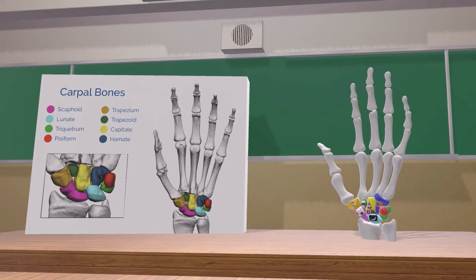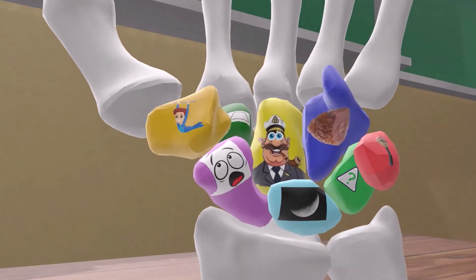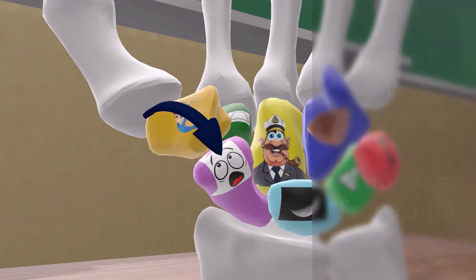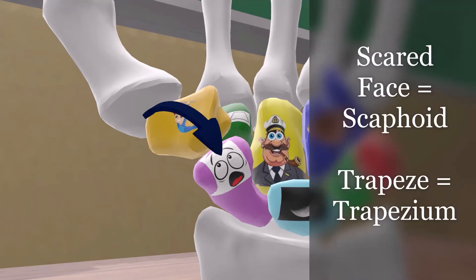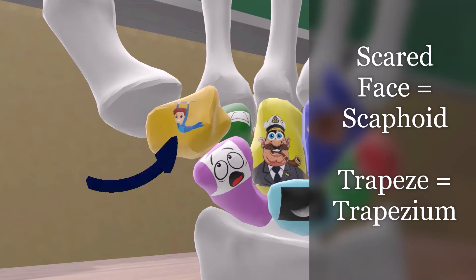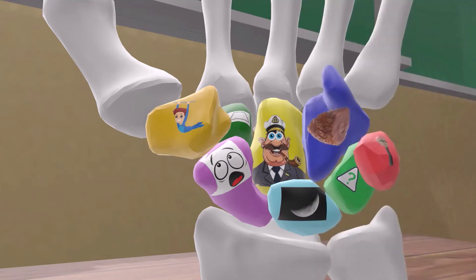Let's make a story out of the carpal bones. We have this scared face for scaphoid — he's scared because he's looking at the guy on the trapeze. Trapeze for trapezium. The scared face is worried the guy on the trapeze is going to fall.